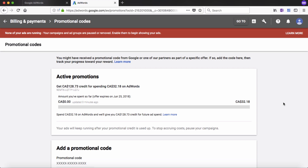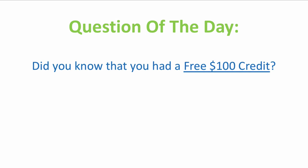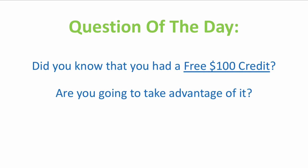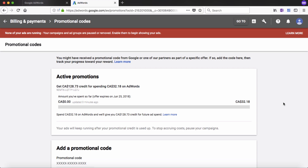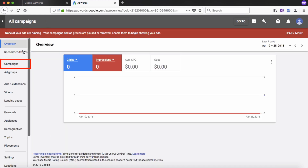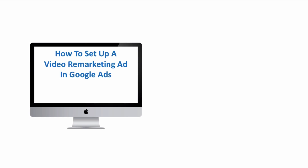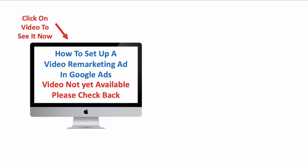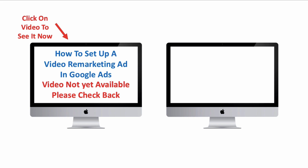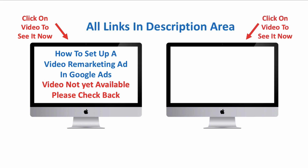That's really all there is to claiming your $100 credit from Hostgator. The question of the day is: did you even know that you had a free credit available on Hostgator, and are you going to take advantage of it? Leave a comment below. If you want to start creating a new ad inside Google Ads right now, click the arrow in the top left to go back to the overview page, then click on campaigns and the big blue plus sign to create a new campaign. All links are available in the description area below the video. Thanks for watching. Take care of yourself and your loved ones.